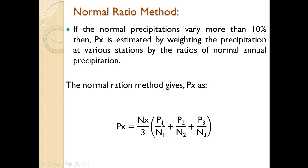Here P1, P2, P3 are known; N1, N2, N3 are known; and Nx — the normal average annual precipitation of station X — is also known. Therefore Px can be very easily calculated.